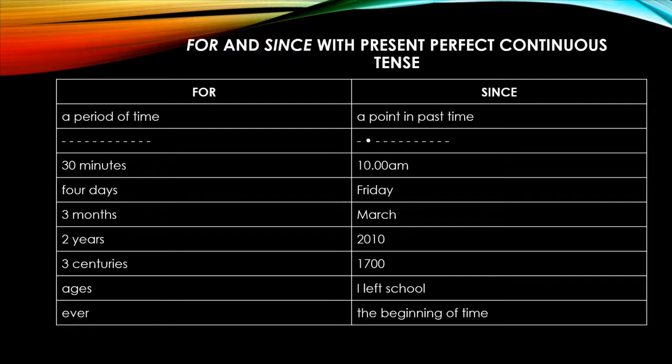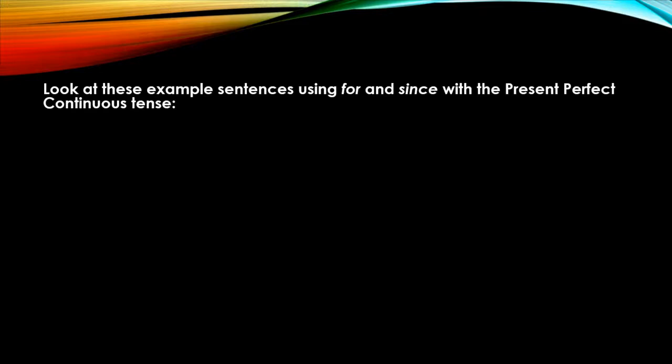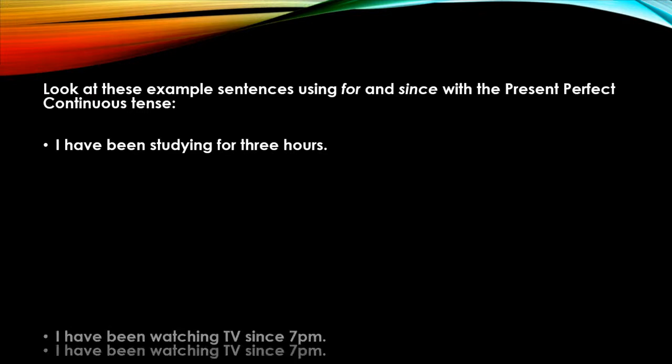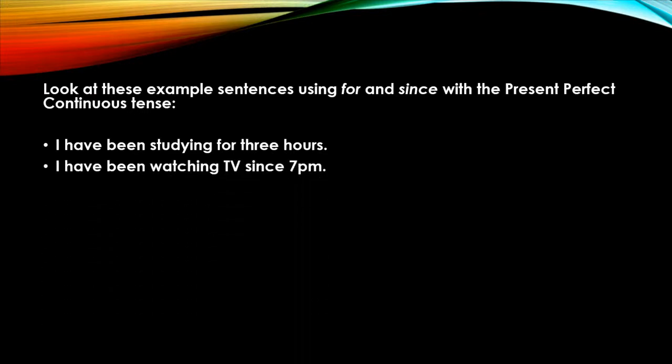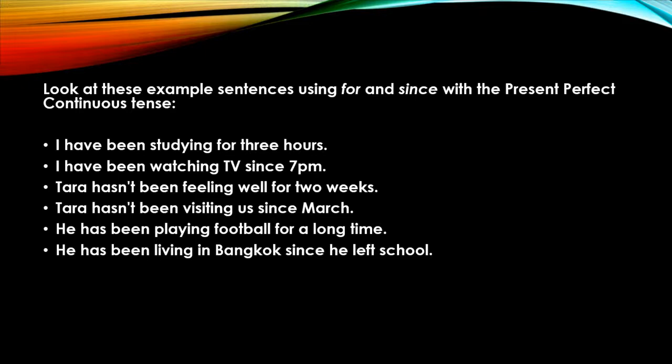Friday, March, 2010, 1700, I left school, the beginning of time. Look at these example sentences using for and since with the present perfect continuous tense. Example: 'I have been studying for three hours' - for three hours, which is a period of time, that's why we use for. 'I have been watching TV since 7 p.m.' 'Tara hasn't been feeling well for two weeks.' 'Tara hasn't been visiting us since March.' 'He has been playing football for a long time.' 'He has been living in Bangkok since he left school.' These are examples by which you can easily notice when to use for and when to use since.